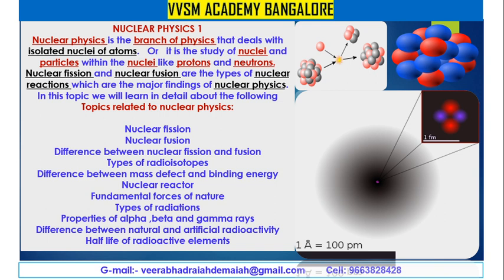What are isotopes? Radioisotopes are elements with the same atomic number but different atomic weights — same atomic number and different atomic masses. For example, Uranium-92-238 and Uranium-92-236. Same atomic number with different atomic masses gives you radioisotopes or radioactive isotopes. Further topics include: the difference between mass defect and binding energy, nuclear reactors, fundamental forces of nature, types of radiations, properties of alpha, beta and gamma rays, difference between natural and artificial radioactivity, and half-life of radioactive elements. These are the fundamental, basic concepts of nuclear physics.